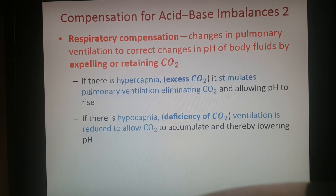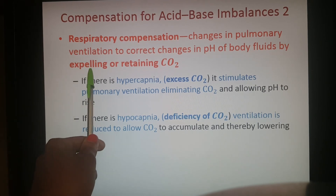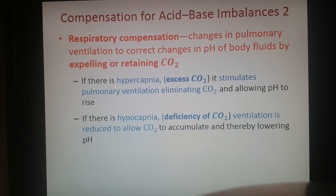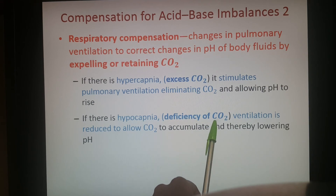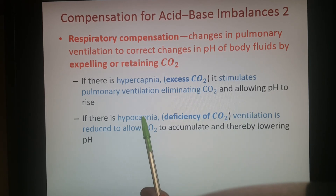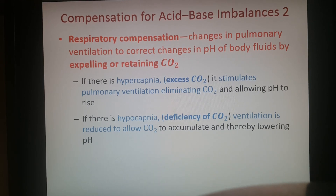With respiratory compensation — the respiratory system making up for what the kidneys should be doing — by changing your breathing rate to correct pH: either getting rid of CO2 or retaining it. For example, if there's too much CO2 (hypercapnia), stimulate more ventilation to exhale it. Hypocapnia — not enough CO2 — means the body is more basic, so reduce ventilation to allow CO2 to accumulate, drive the carbonic acid reaction, release hydrogen, and lower the pH.